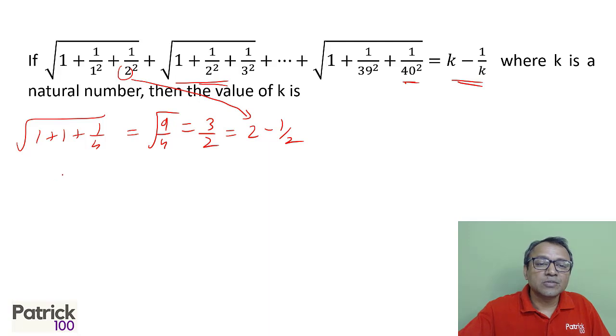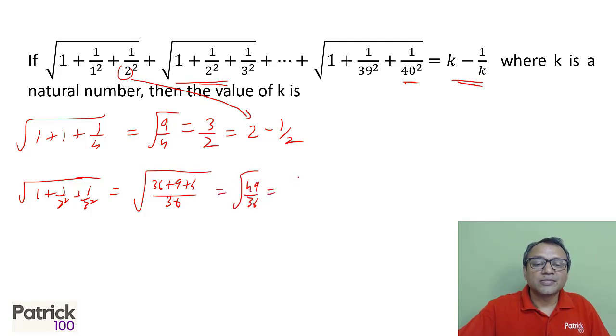Take the next term also. First term, if I take root of 1 plus 1 upon 2 square plus 1 upon 3 square, this will be root of 36 is the denominator. The numerator is 36 plus 4 plus 9. This becomes root of 49 upon 36 or you will get 7 upon 6. If you look at the sum, 3 upon 2 plus 7 upon 6, is 13 upon 6, which is 9 plus 16 upon 6. 16 upon 6, if you also look at is nothing but 8 upon 3 or 3 minus 1 upon 3. When the last term is 3, you get 3. When the last term is 2, you get 2.